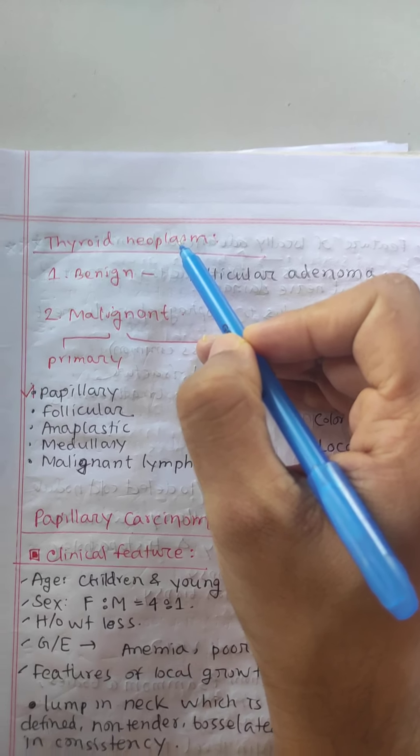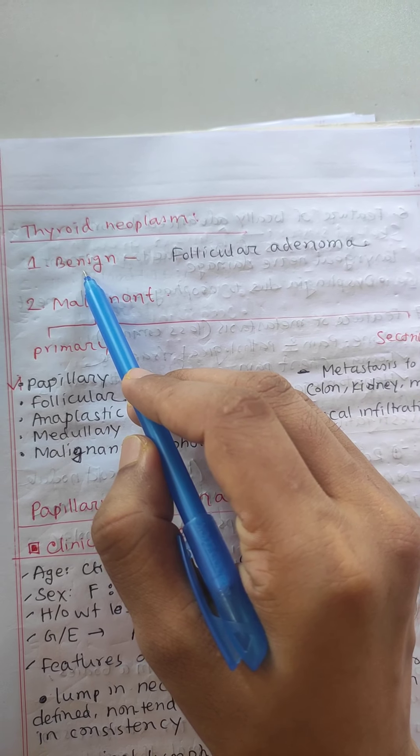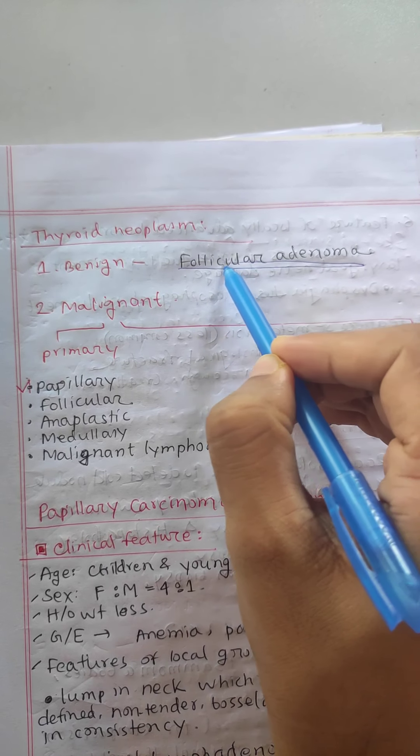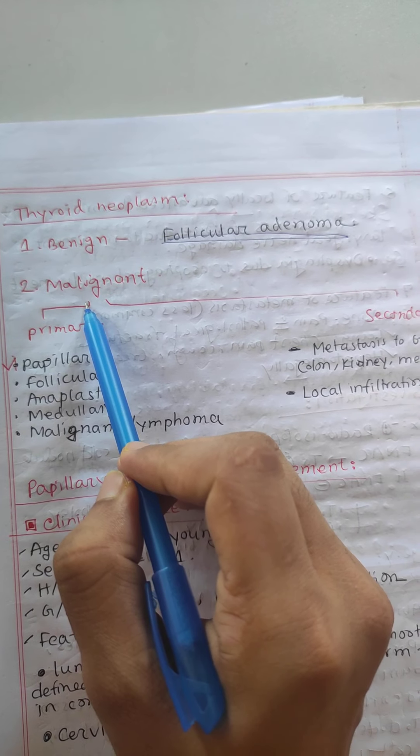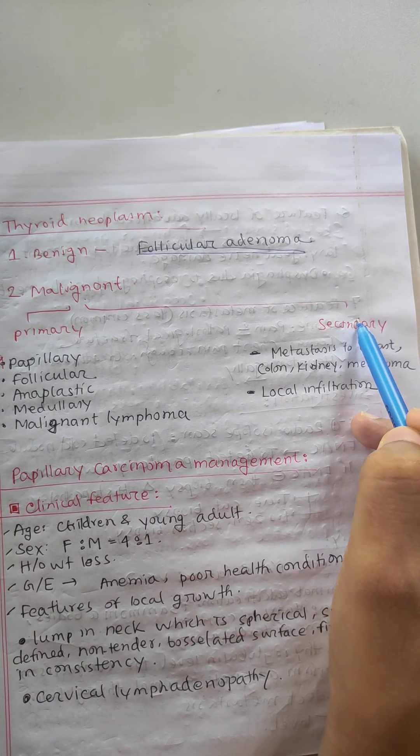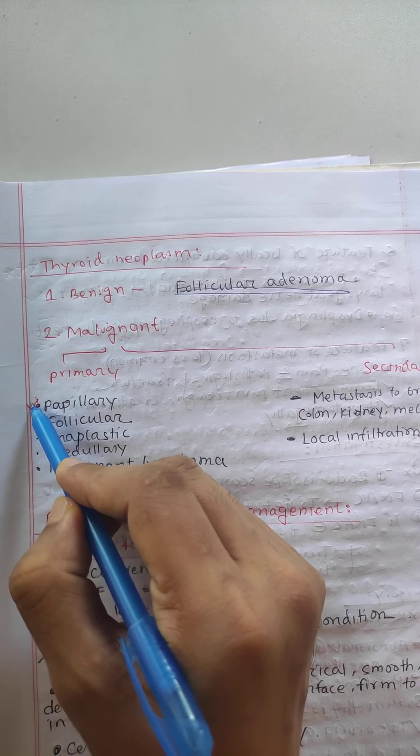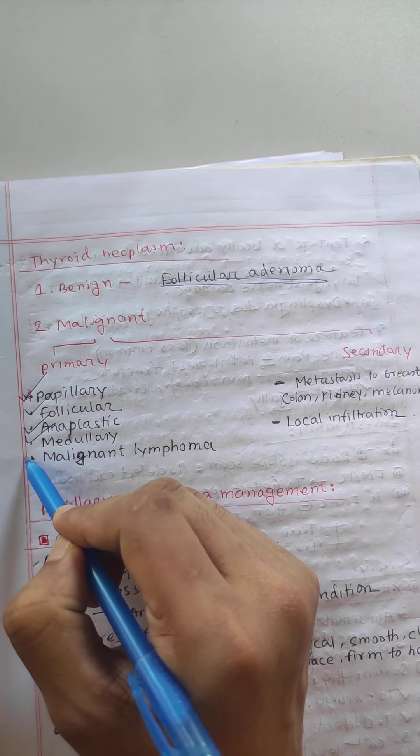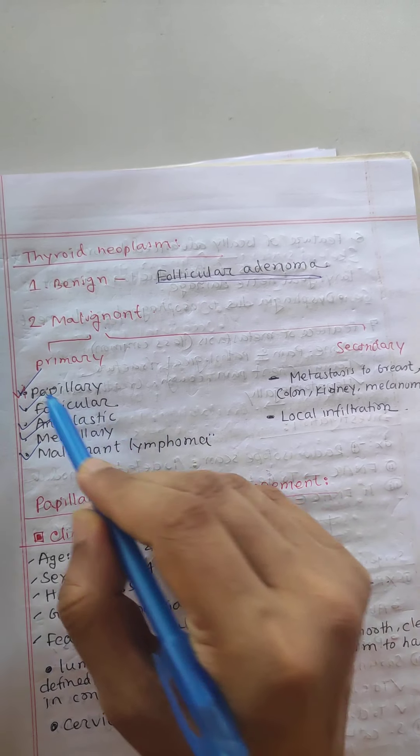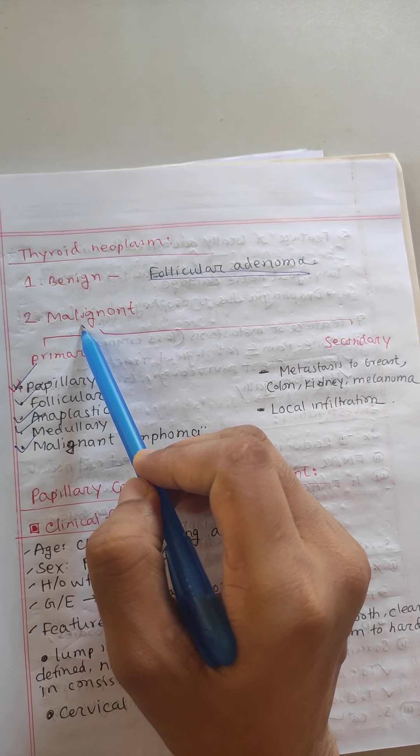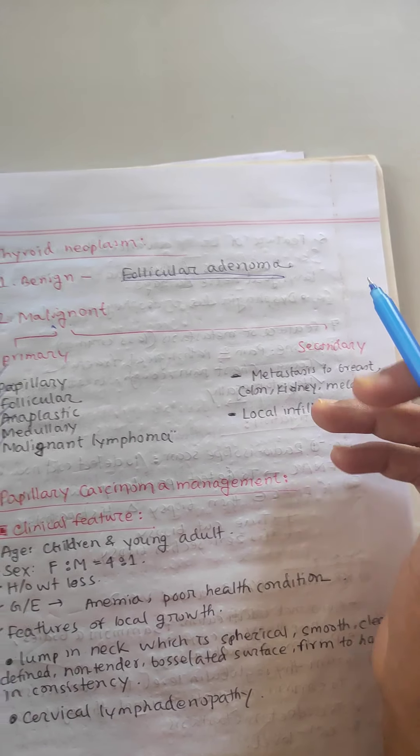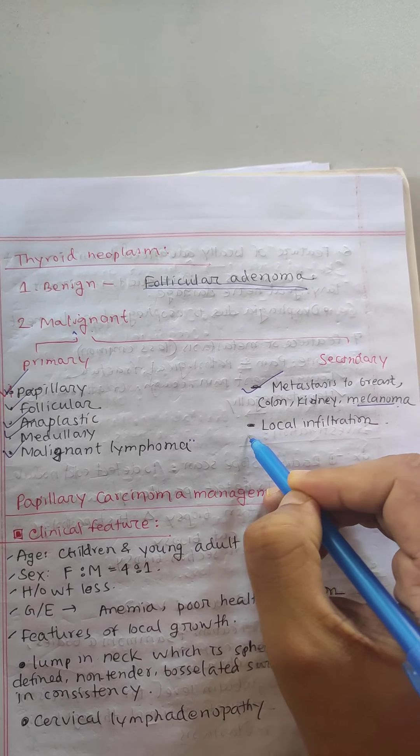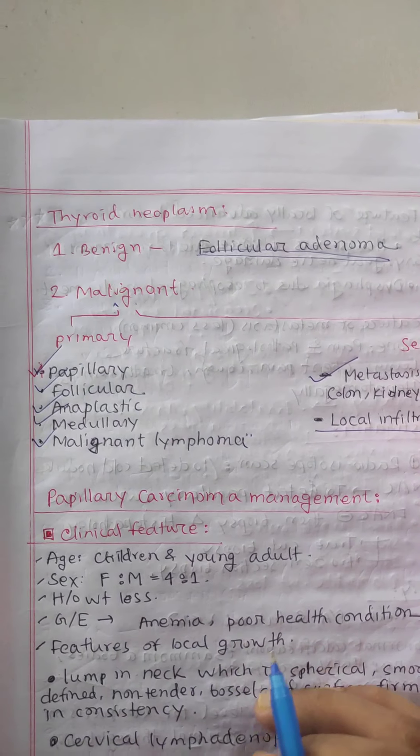Thyroid neoplasm - benign is follicular adenoma. Malignant is primary and secondary. Primary includes papillary carcinoma, follicular carcinoma, anaplastic carcinoma, medullary, and malignant lymphoma. Secondary is metastasis from breast, colon, kidney, and melanoma, or local infiltration.